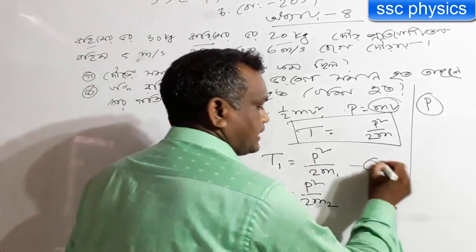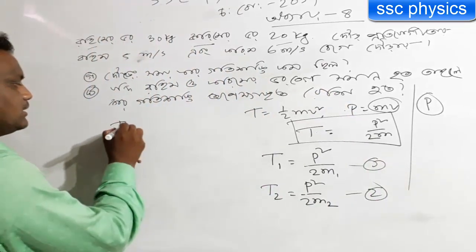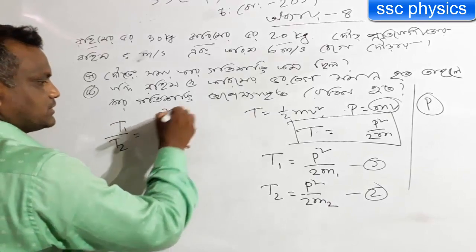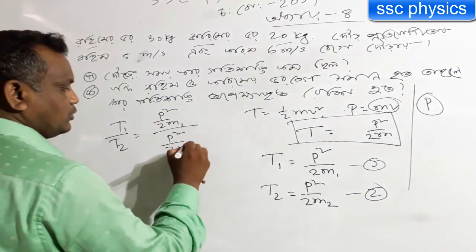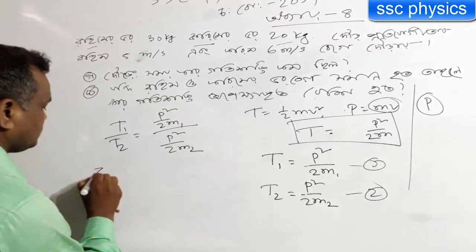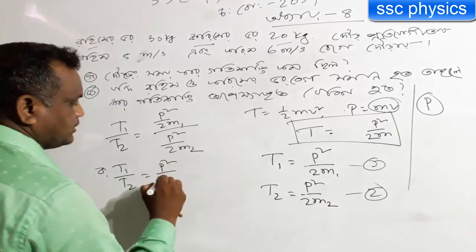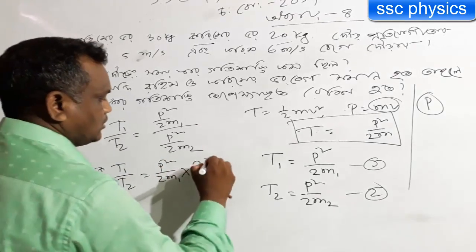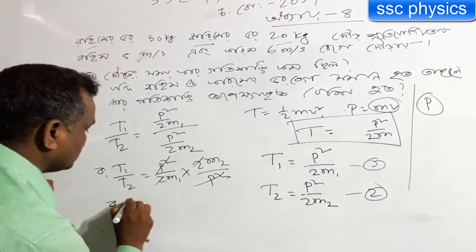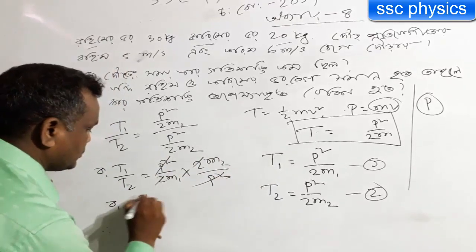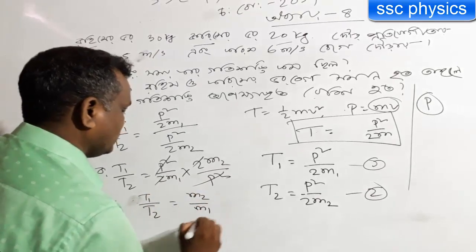He died. I will show you the two numbers. What are you doing? T1 by T2. PS2M1. PS2M2. That's correct. So T1 by T2 = P² by 2M1, divided by 2M2 by P². PS2 by 2, 2 by 2. So T1 by T2 — what is M2 by M1?